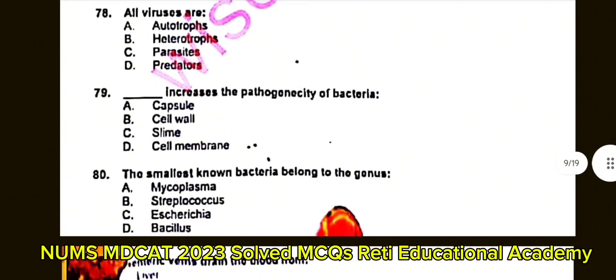Question number 78: All viruses are? A. Autotrophs. B. Heterotrophs. C. Parasites. D. Predators. The correct answer is C: Parasites.